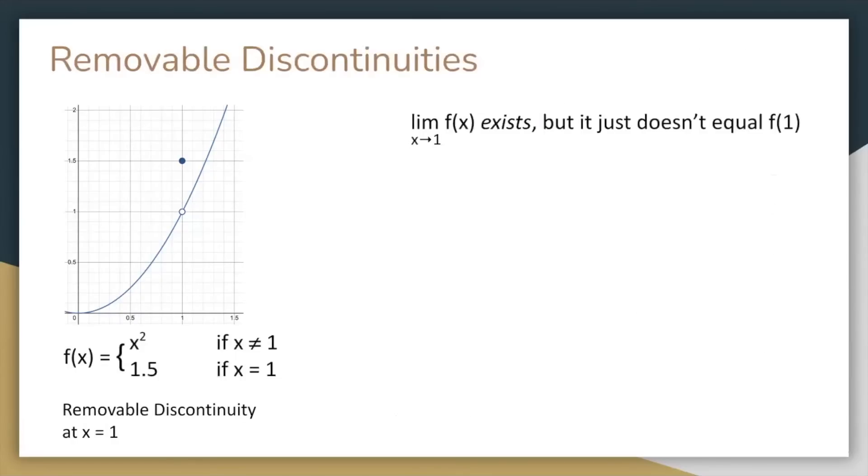Let's see why the first discontinuity is removable. The key is that the limit as x approaches 1 of f of x exists, unlike in the other cases where the limit didn't exist. If we redefine f of 1 as 1, which is what the limit equals, then f is now continuous at x equals 1.